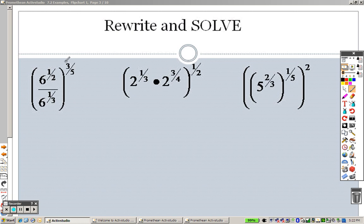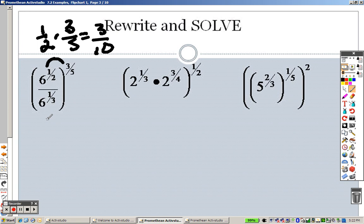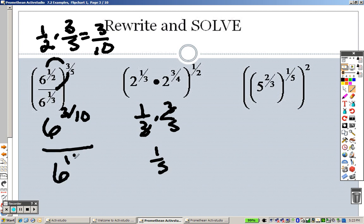According to our rule, just like before, you take whatever the exponents with parentheses and you multiply it through. So this is like saying 1 half times 3 fifths, which is 3 tenths, so the top is 6 to the 3 tenths. I take this through to the bottom, and that's like saying 1 third times 3 fifths, which the 3's just cancel out, so that's like simplifying it to 1 fifth, so this is like saying 6 to the 1 fifth.